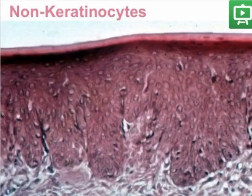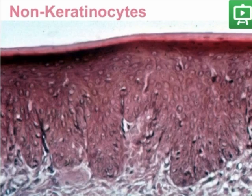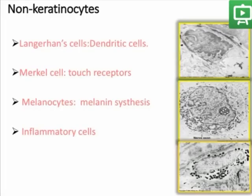The non-keratinocytes are cells which compose only 10% of the epithelium. They are uniquely clear cells under the microscope, as you can see here. All cells that are clear can be non-keratinocytes. These cells can be Langerhans cells, Merkel cells which are touch receptors, melanocytes which synthesize the melanin pigment, or inflammatory cells such as lymphocytes.